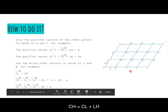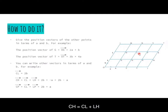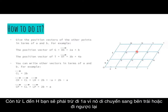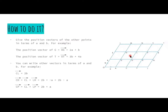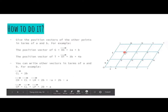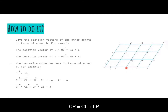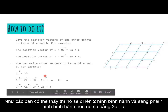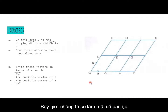The next one is CH. CH equals CL plus LH. To go from C to L you go up two parallelograms, and to move from L to H you subtract one a, because you go to the left instead of the right. And the next one is CB: CB equals CL plus LB. CL needs to move up two parallelograms and move to the right one parallelogram, so CB equals 2b plus a.